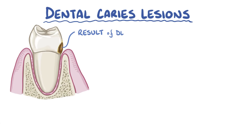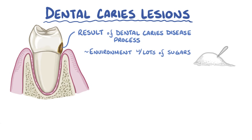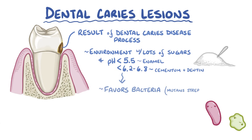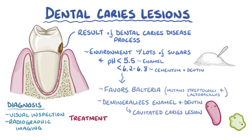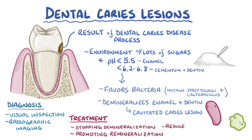As a quick recap: dental caries lesions are the end result of the dental caries disease process. They typically form in an environment where there are lots of sugars in the mouth and a pH below 5.5 for enamel, and below 6.2 to 6.8 for cementum and dentin. That environment favors bacteria like mutans streptococci and lactobacillus, which demineralize enamel and the dentin beneath it, and if untreated it can eventually result in a cavitated caries lesion. Diagnosis is done by visual inspection and radiographic imaging, and treatment and prevention includes stopping demineralization and promoting remineralization, as well as reducing levels of harmful bacteria and restoring the surface of the tooth if needed.